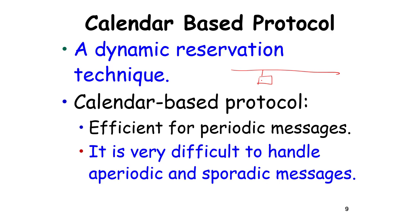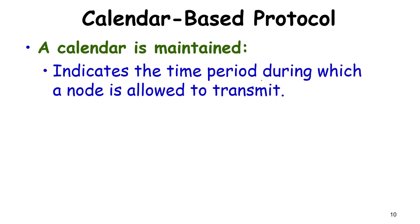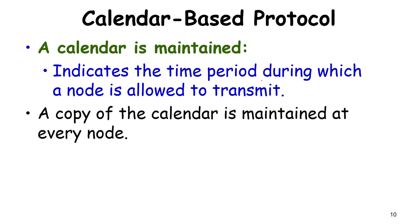Calendar-based protocols are quite difficult to use for sporadic and aperiodic messages. The idea is that the time period during which a node is allowed to transmit is known to everybody. Every node has a calendar stating when each node is allowed to transmit, and they share a notion of global time — so everybody knows that node 1 transmits, then node 2, then node 3, and the schedule repeats, similar to a cyclic scheduler.